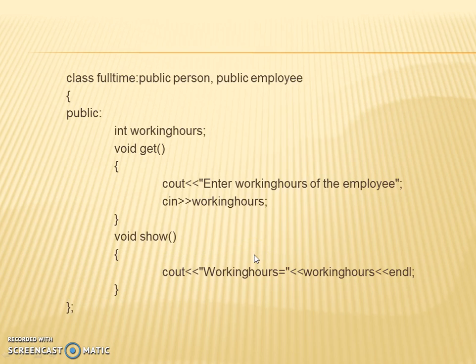Now we will see the class fulltime which has two base classes, person and employee, with visibility public for both base classes from where we derived class fulltime. Here it is displayed as public access specifier.